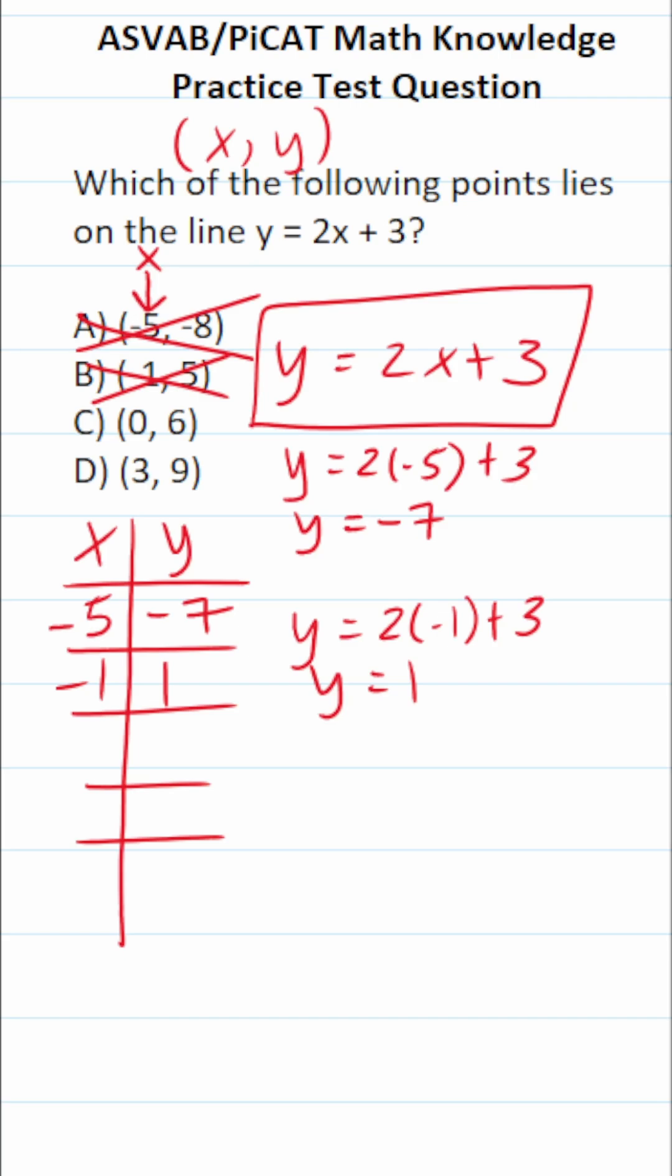Let's move on to x being 0. This says y equals 2 times 0 plus 3. This is y equals 3. So the point 0, 3 is on the line. 0, 6 is not on the line.